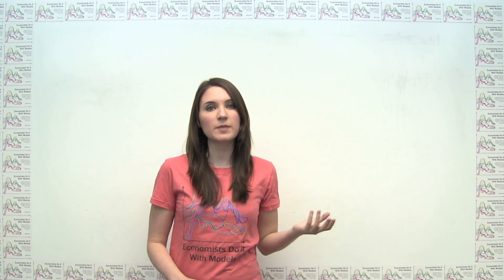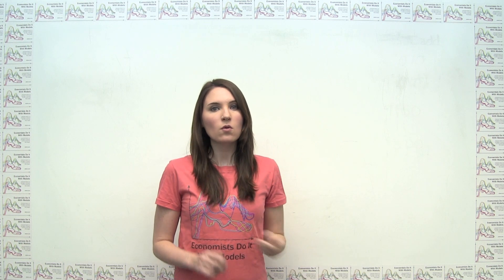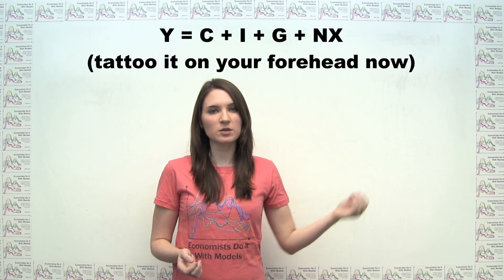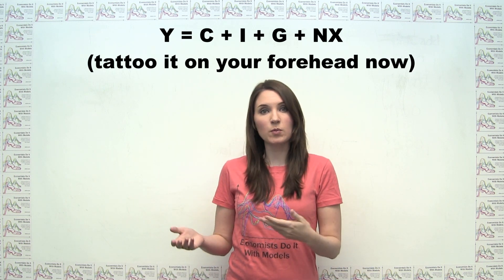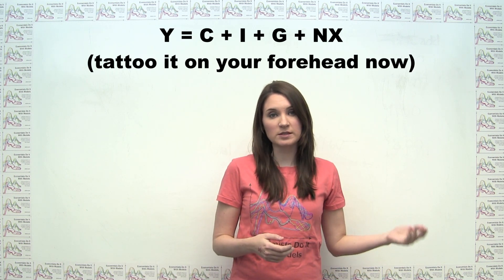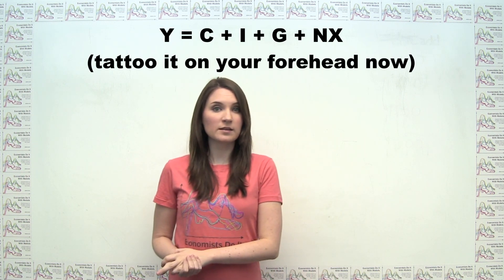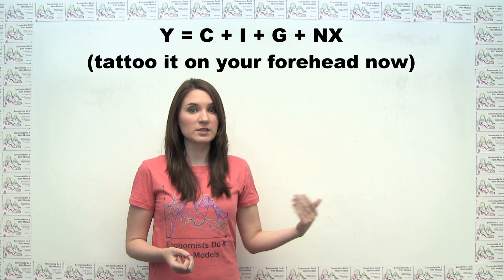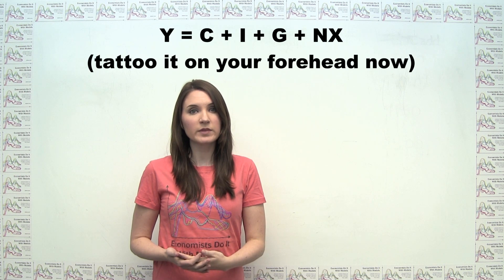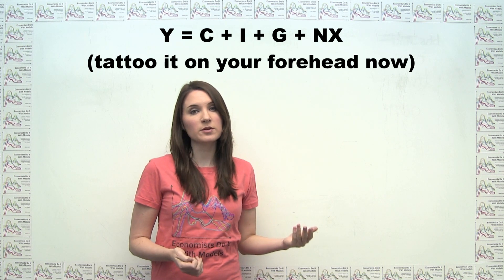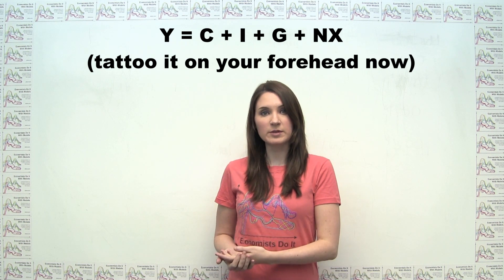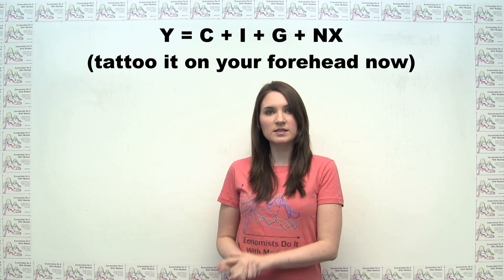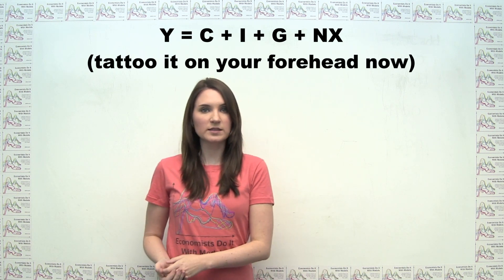Putting the expenditure components together yields one of the best known macroeconomic identities: Y equals C plus I plus G plus NX. In this equation, Y represents GDP, or domestic output, income, or expenditure on domestic goods and services, and the items on the right-hand side represent the components of expenditure we just talked about. In the US, consumption tends to be the largest component of GDP by far, followed by government purchases and then investment. Net exports tends to be negative, since the US typically imports more than it exports.